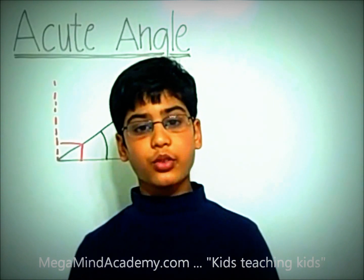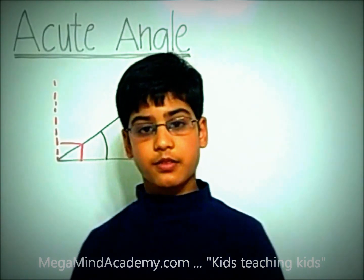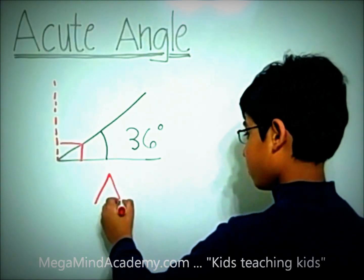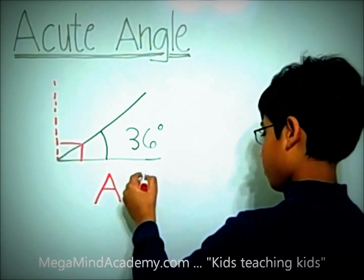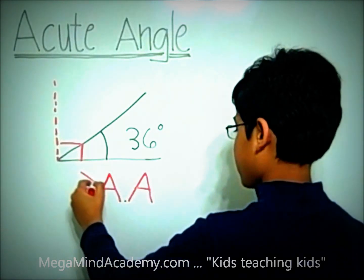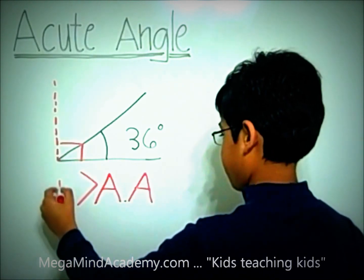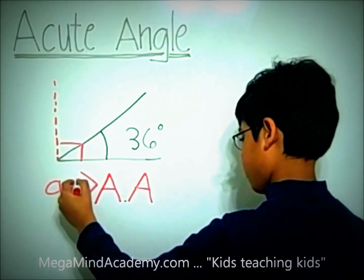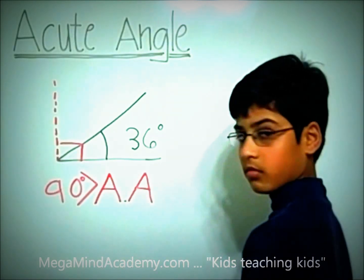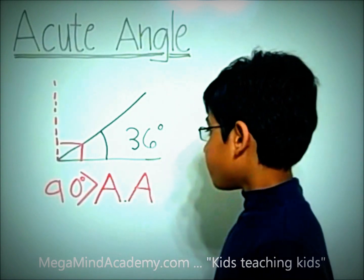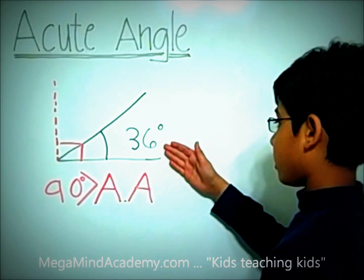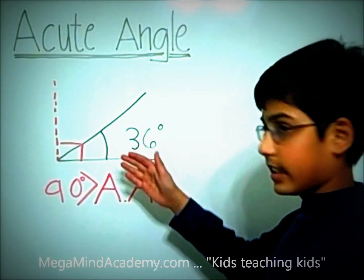Now, let's review what an acute angle is. An acute angle is an angle that is less than 90 degrees. Like this acute angle, which is 36 degrees, is less than 90 degrees.